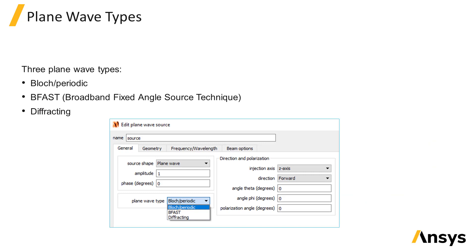There are three different plane wave source types that you can select from in the source settings: Bloch periodic, BFAST, and diffracting. You can select the type of plane wave to use depending on the use case.